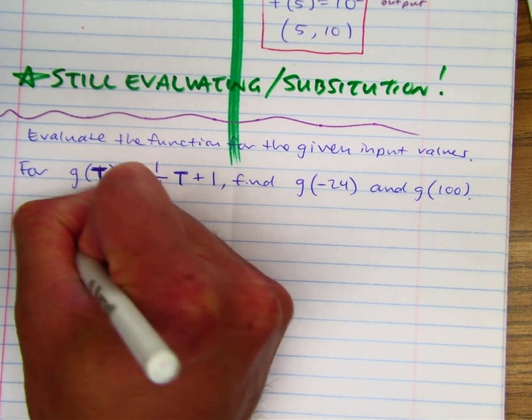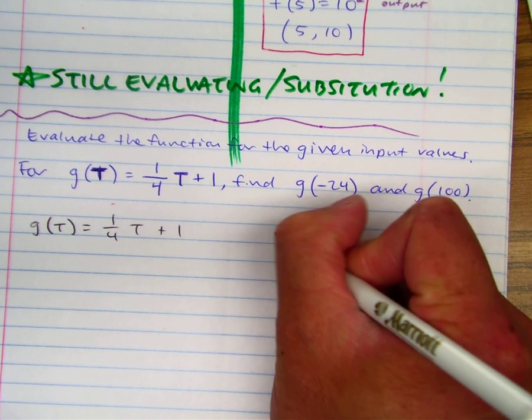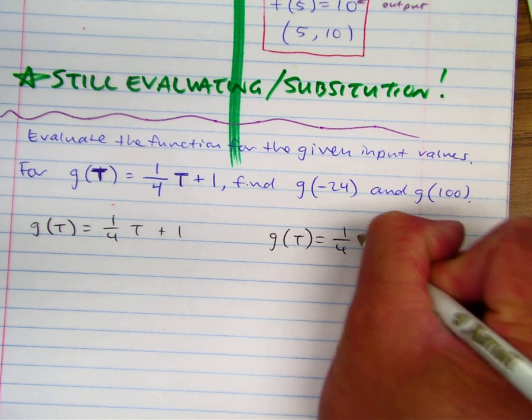g of t equals one-fourth t plus one. I'm going to write it twice. g of t equals one-fourth t plus one.